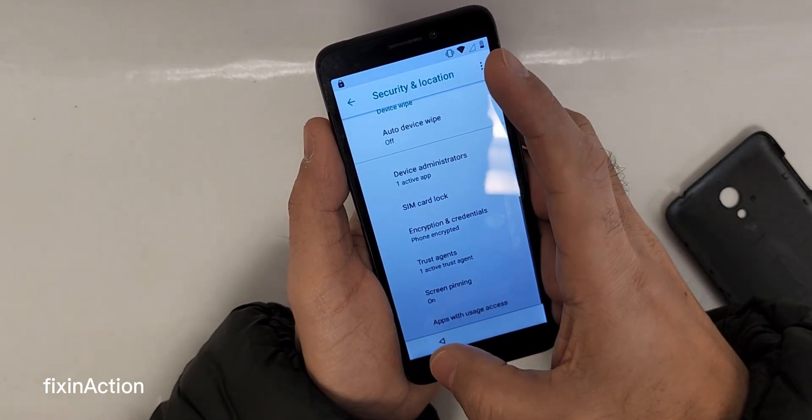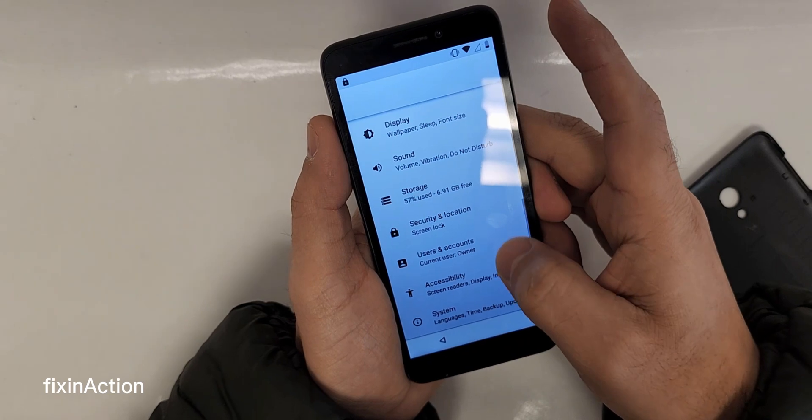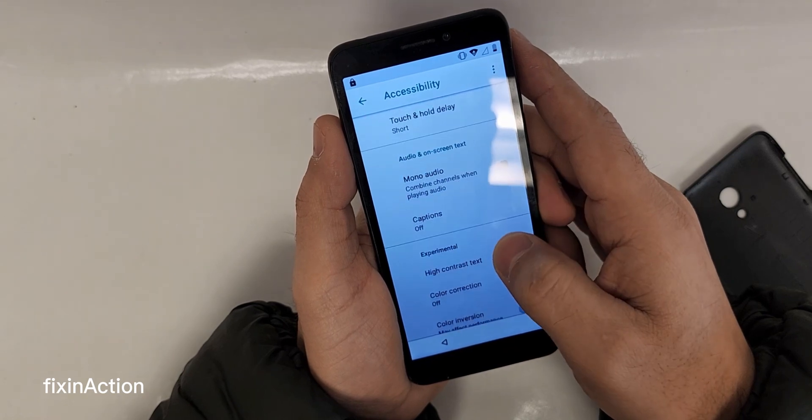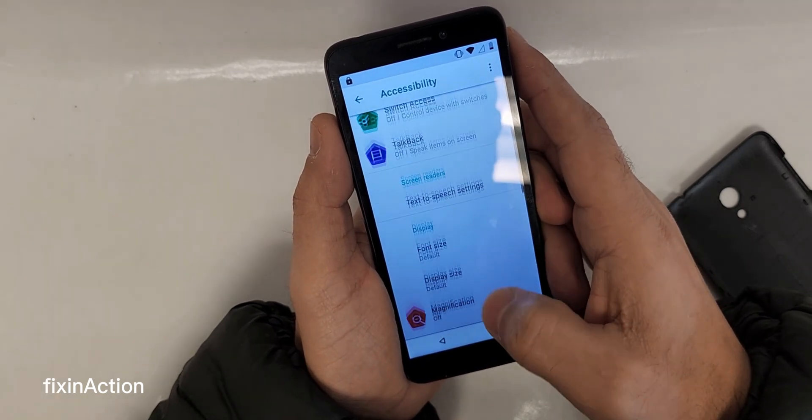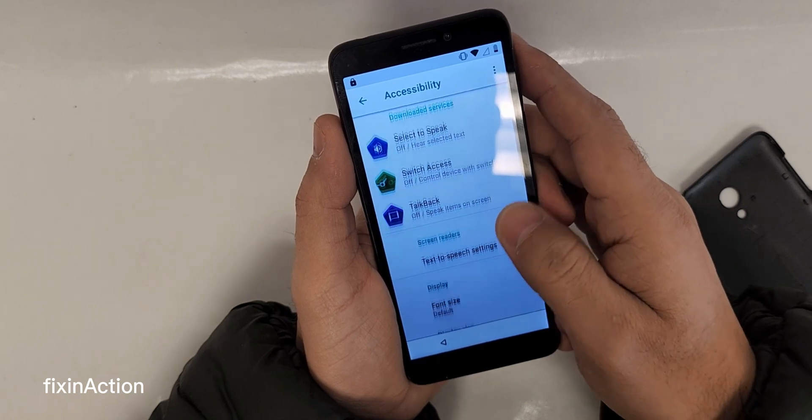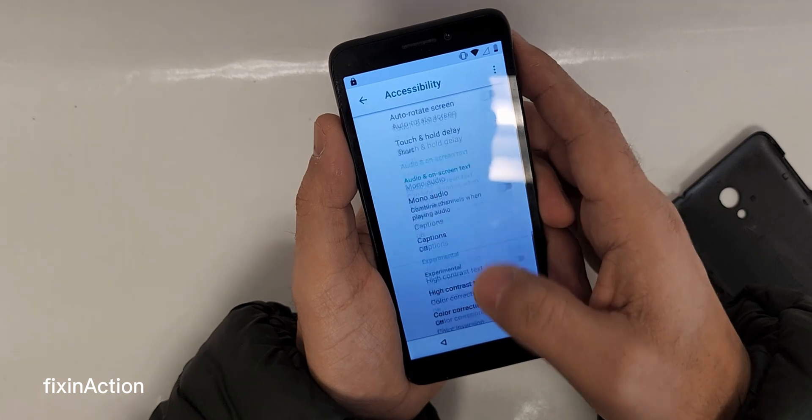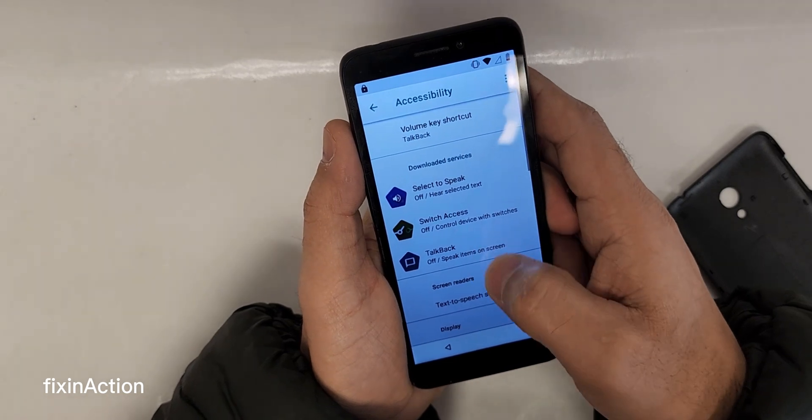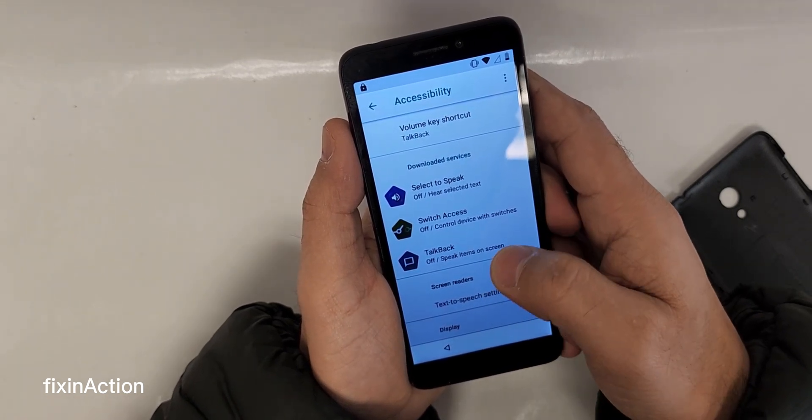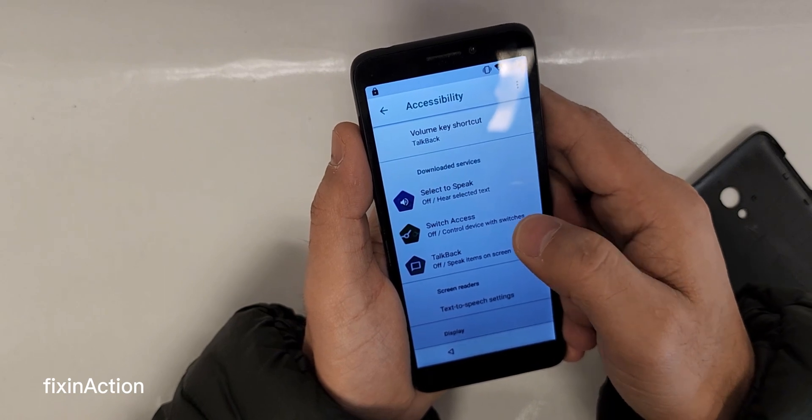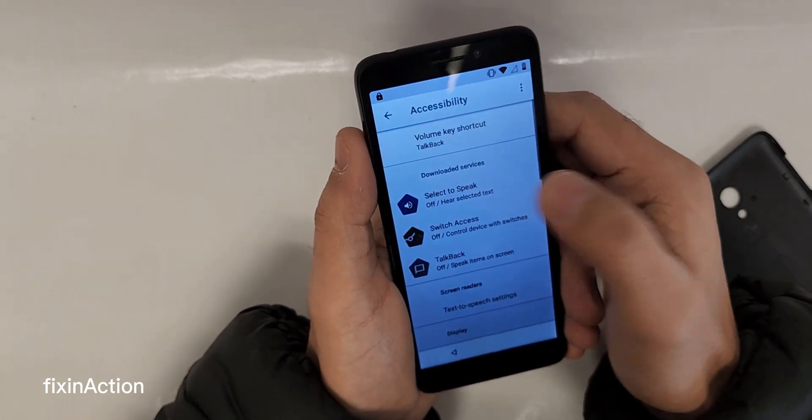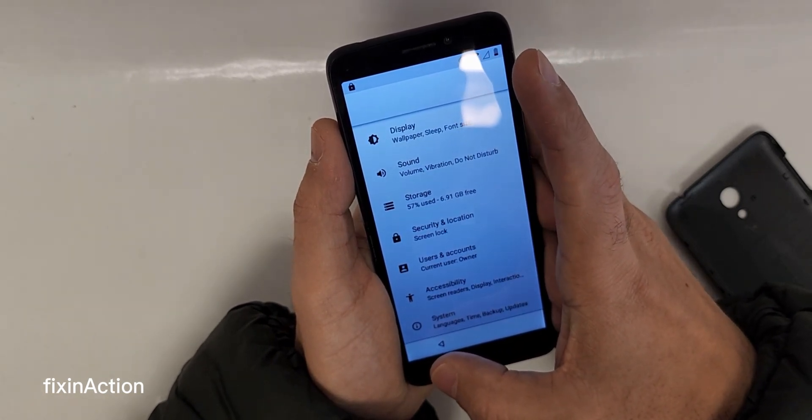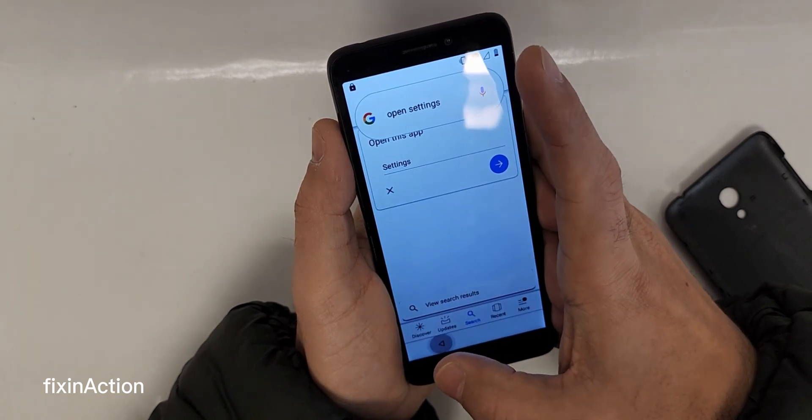In case if this doesn't work, we will just add some more options. I'm trying to find Assistant Menu and Switch Access. This device doesn't have Assistant Menu. Let's try and restart the device.